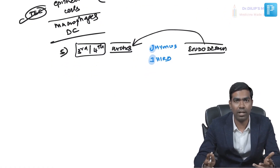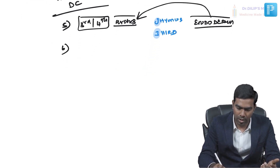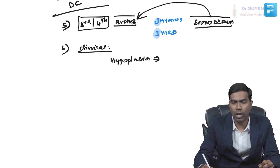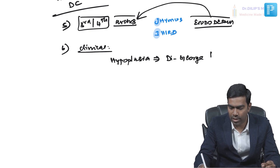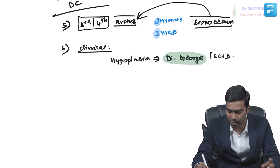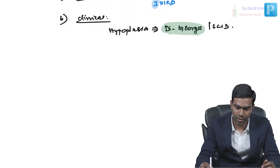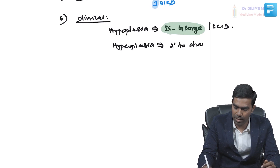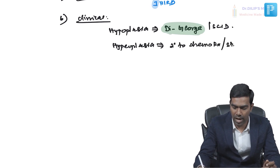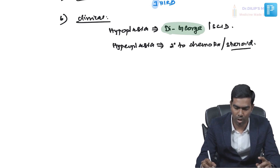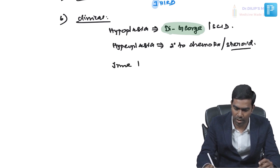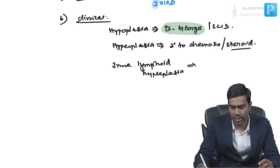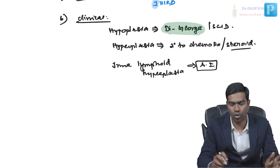Clinically, thymic hypoplasia or aplasia is a key feature of DiGeorge syndrome and also seen in SCID. Thymic hyperplasia can be pseudo-hyperplasia, commonly secondary to chemotherapy or steroid therapy. True lymphoid hyperplasia of the thymus is typically seen in autoimmune disorders.